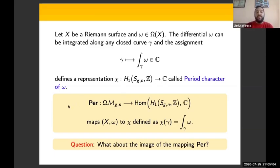We can define now another mapping called the period mapping, denoted by Per: Ω_{g,n} → Hom(H_1(S_{g,n}, ℤ), C), mapping each couple (X, ω) to the representation χ defined by χ(γ) equals the integral of ω along γ.